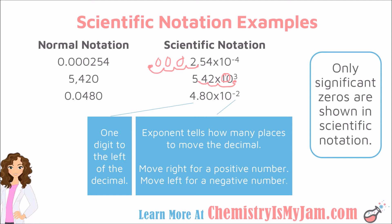In my last example, I have another negative exponent, so the decimal needs to go to the left. My decimal is here and I am going to move it 2 places to the left. There is a space that gets a zero, so my number becomes 0.0480.